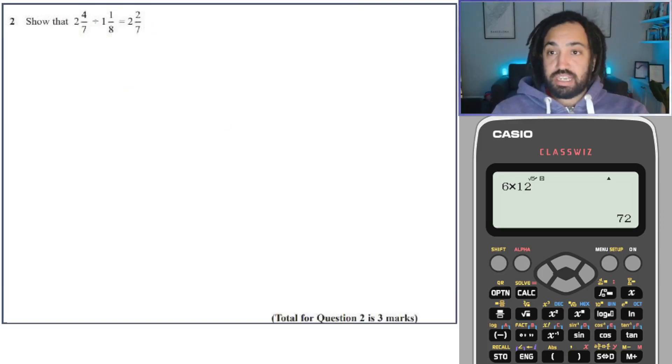Okay, next question. That is a division. And we're going to do the same thing again. We're going to find the top heavy fraction, which is going to be 7 times 2 is 14 plus 4 is 18. And 1 times 8 is 8 plus 1 is 9. And this is a division.